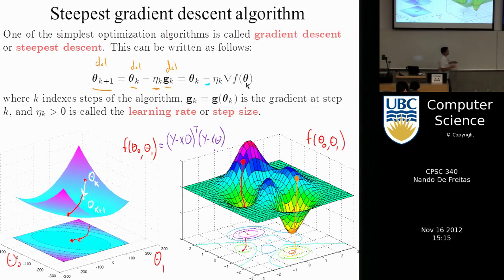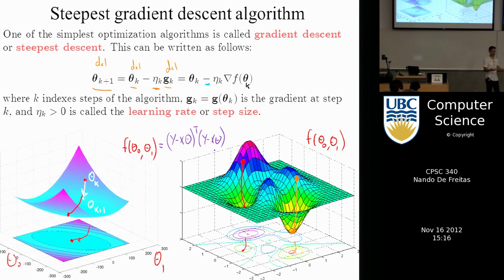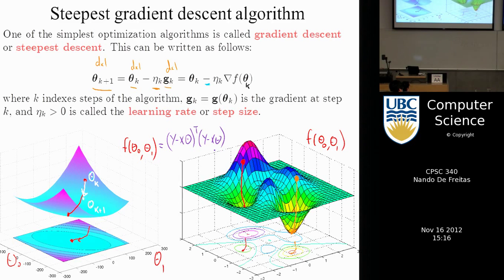For the linear model it's kind of brute force to do gradient descent because we can actually solve exactly. But if I teach you how to do it for the linear model, it will be obvious how to do it for the non-linear model. The only difference with non-linear models is you'll have multiple minima, so you might not converge to the global one.